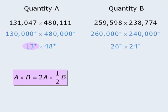So to apply the rule, we'll multiply this number by 2 to get a number a little bit bigger than 26. And then we'll multiply this number by one-half to get a number a little bit bigger than 24. From here, we'll compare the two quantities in parts.